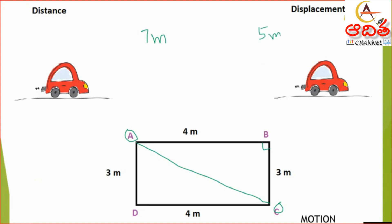Now, distance only has magnitude — the value is 7 meters. Displacement has both magnitude as well as direction, which is south-east here. We have covered position and how to mention the direction of an object.